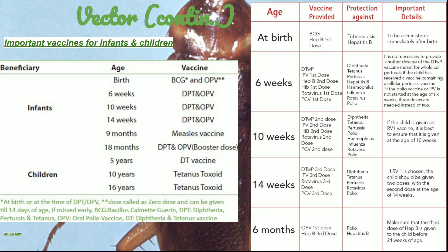At six weeks, the infant is given DPT and OPV. At ten weeks, DPT and OPV again. At fourteen weeks, DPT and OPV again. At nine months, the measles vaccine is given. At eighteen months, DPT and OPV are given as booster doses. At five years, the DPT vaccine is given. At birth, the BCG vaccine and the first dose of Hepatitis B are also administered.